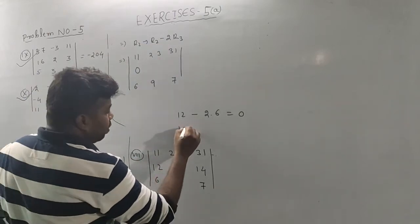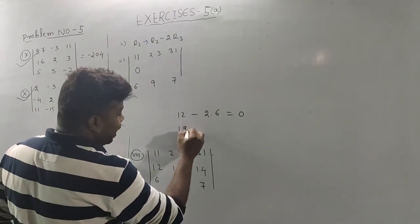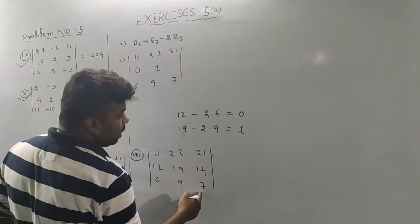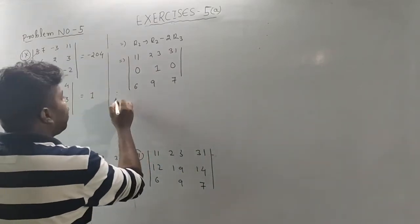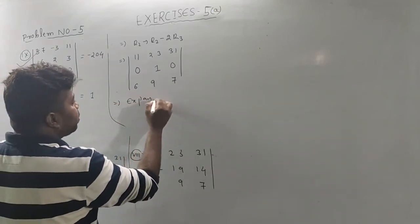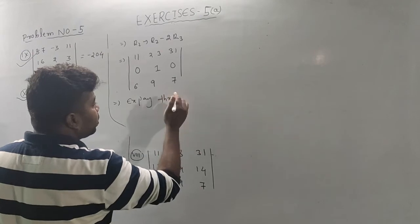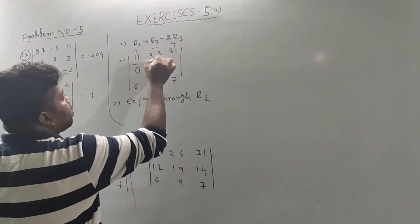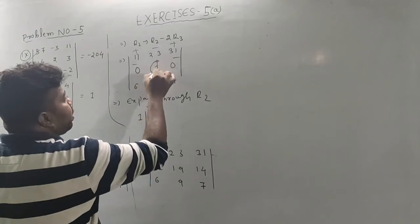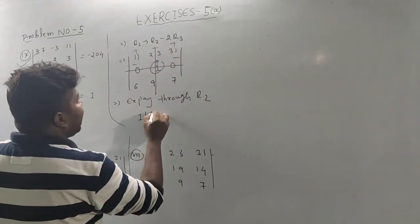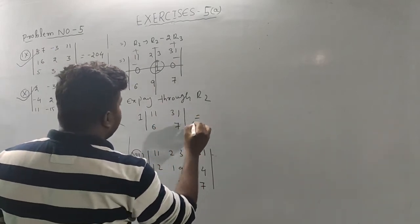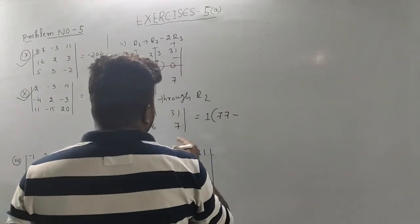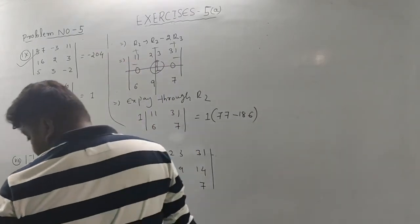So which value is 10? So expanding through R2: plus, minus, plus, minus, plus, minus, plus, minus. The value is 1. So 1 into: row 1, column 1 gives 11, 31, 6, 7. So 1 into: 11 into 7 is 77. Minus 31 into 6 is 186. So the value is 186.